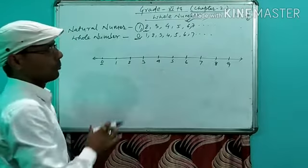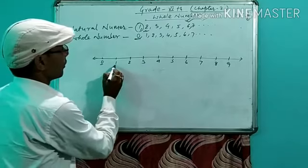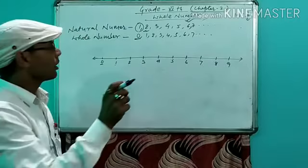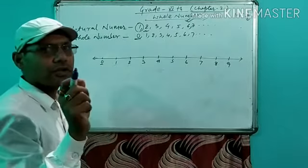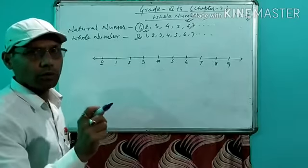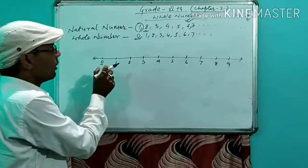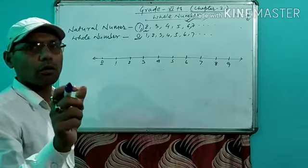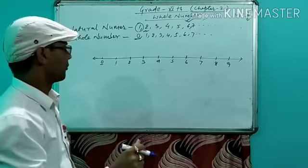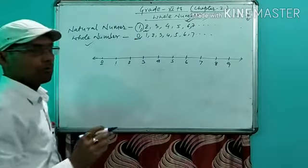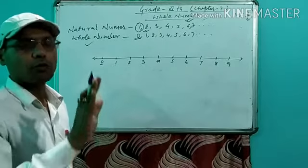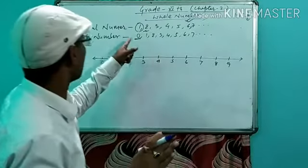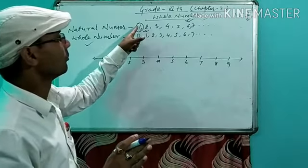On the number line, from 0 to 1, 1 to 2, 2 to 3, 3 to 4 — in between any two numbers the unit distance is 1. By taking unit distance as 1, we can represent whole numbers on the number line. Important fact: 0 is a whole number but not a natural number. 0 is not in the set of natural numbers.